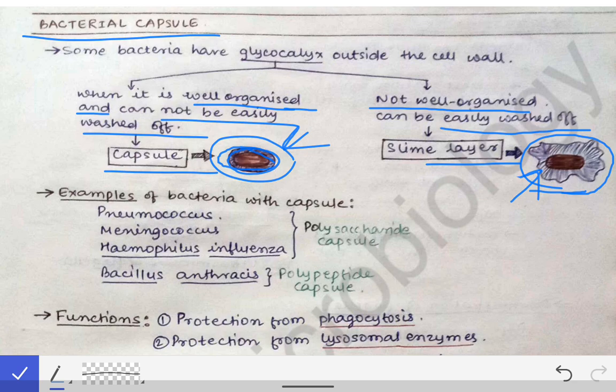That is the difference between the capsule and the slime layer, and from that you can derive the definition of the capsule. The bacterial capsule can be defined as a well-organized layer of glycocalyx outside the cell wall of bacteria which cannot be easily washed off.